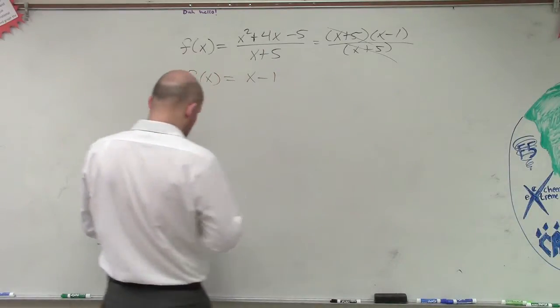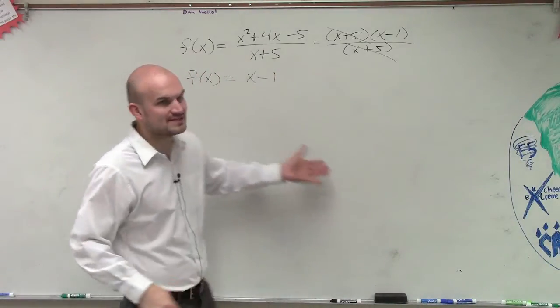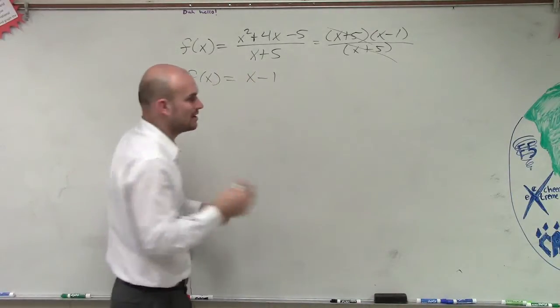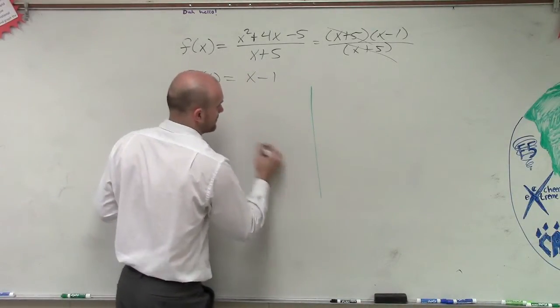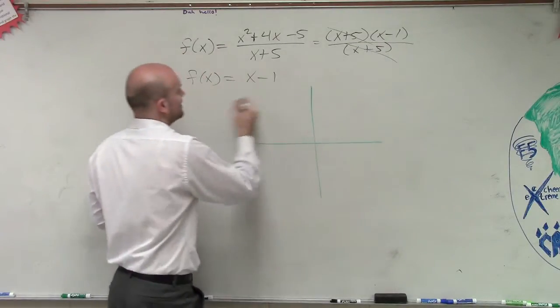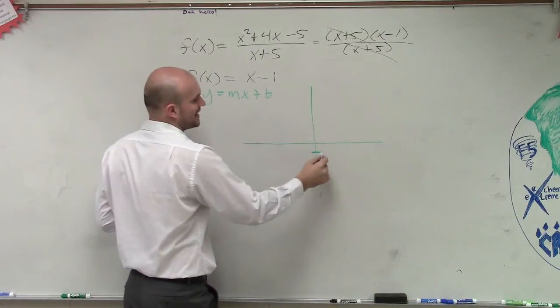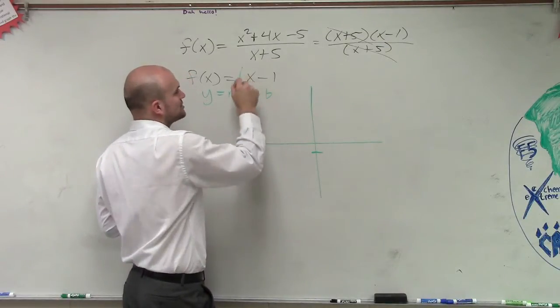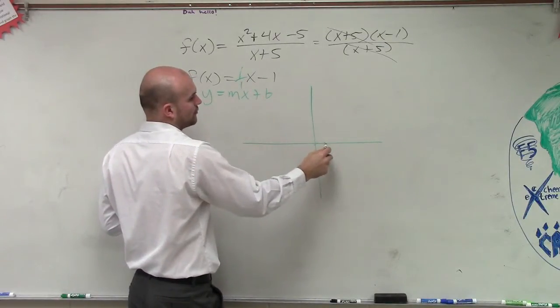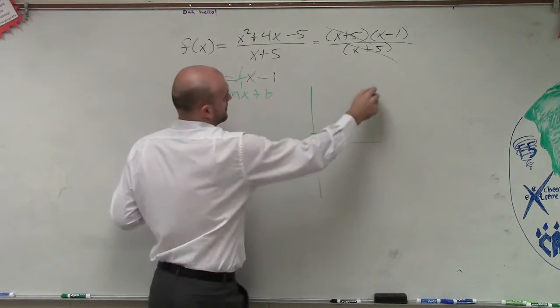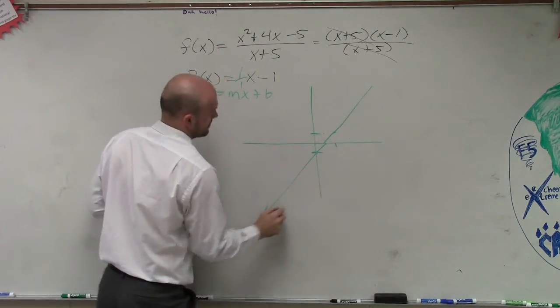So they asked us to graph it. The graph isn't going to be a hyperbola. The graph is x minus 1. So let's graph this. Remember everything to be written in y equals mx plus b form. So I go down to negative 1 and I follow the slope, which is 1 over 1. Up 1 over 1. Up 1 over 1.